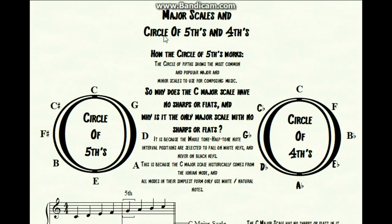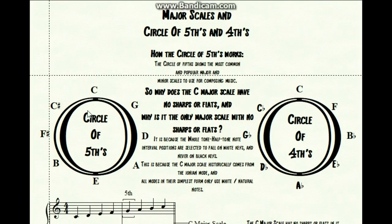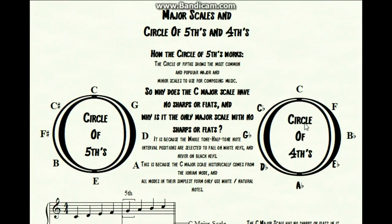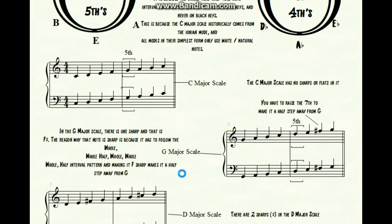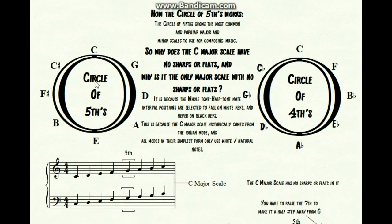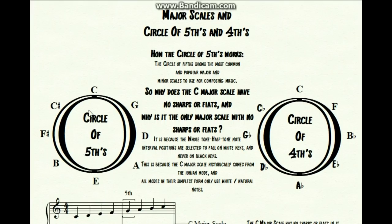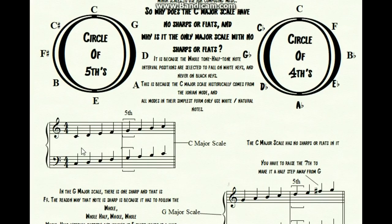So let me teach you first what the circle of fifths is and what the circle of fourths is. The circle of fifths shows the most common and popular major and minor scales to use for composing music. So why does the C major scale have no sharps and flats in it, and why is it the only major scale with no sharps and flats?